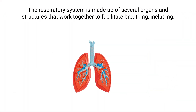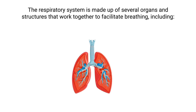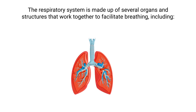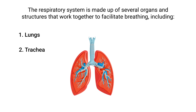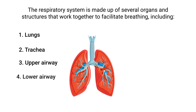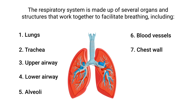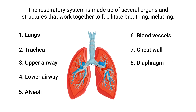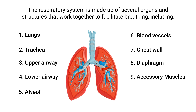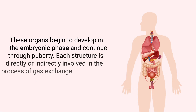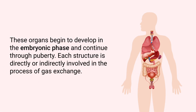The respiratory system is made up of several organs and structures that work together to facilitate breathing, including lungs, trachea, upper airway, lower airway, alveoli, blood vessels, chest wall, diaphragm, accessory muscles, and pleural membranes. These organs begin to develop in the embryonic phase and continue through puberty. Each structure is directly or indirectly involved in the process of gas exchange.